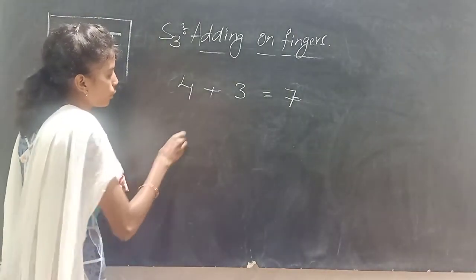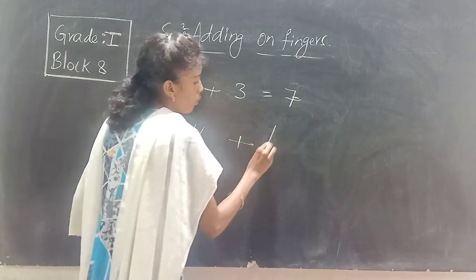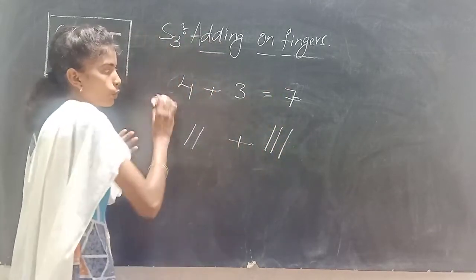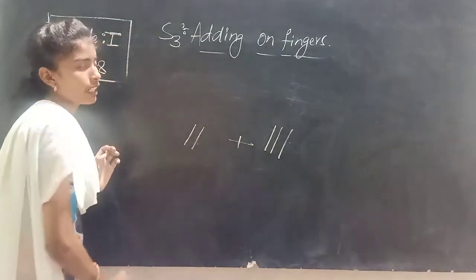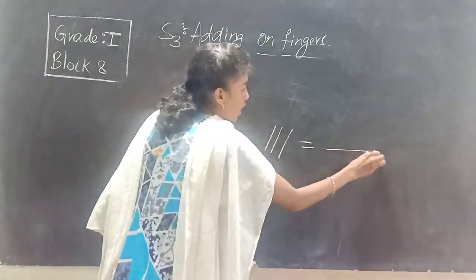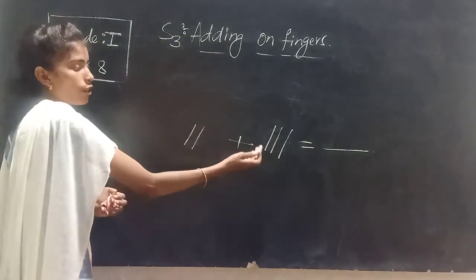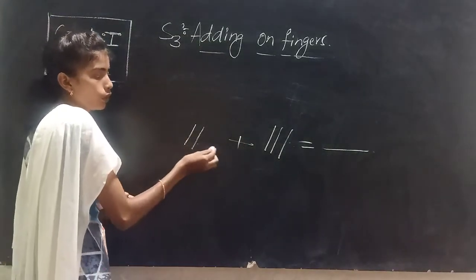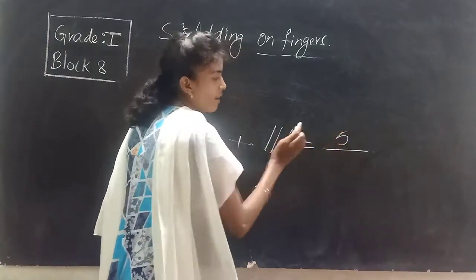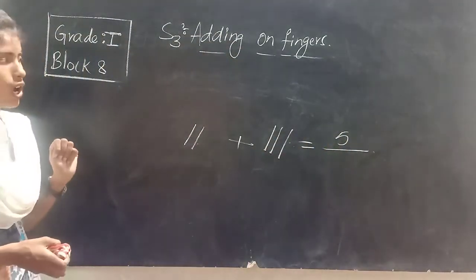Now I have two fingers and three fingers — two fingers and three fingers is equal to dash. How many fingers do I have in all now? We have to combine these: one, two, three, four, five. So how many fingers do I have in all? Five fingers in all.